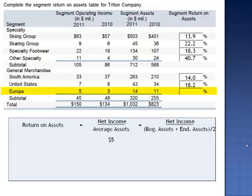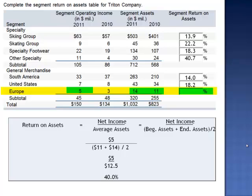And in Europe, net income is $5 million, divided by average assets — $11 million plus $14 million, divided by two — giving average assets of $12.5 million. $5 million divided by $12.5 million is a 40% return on assets.